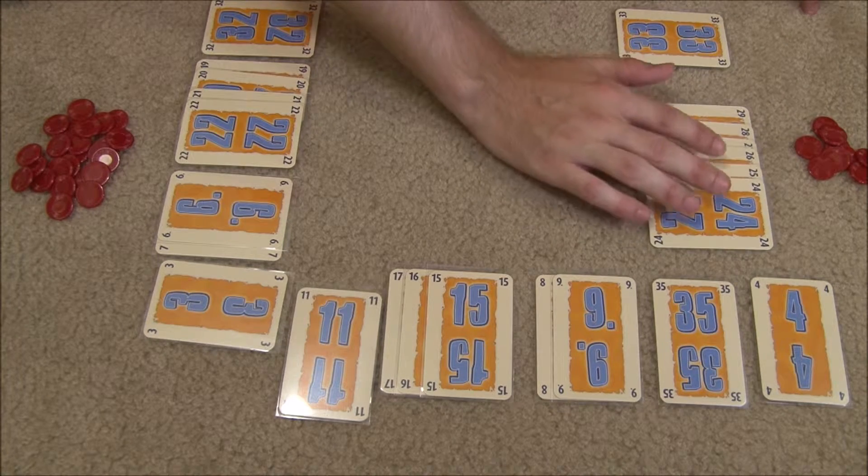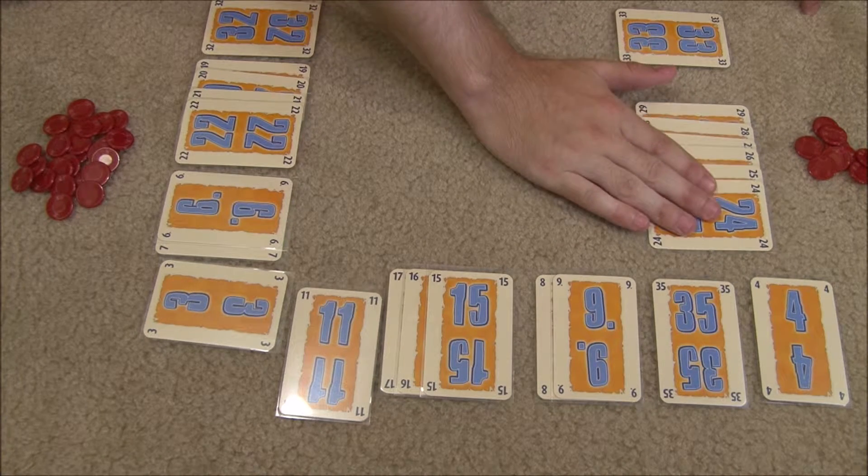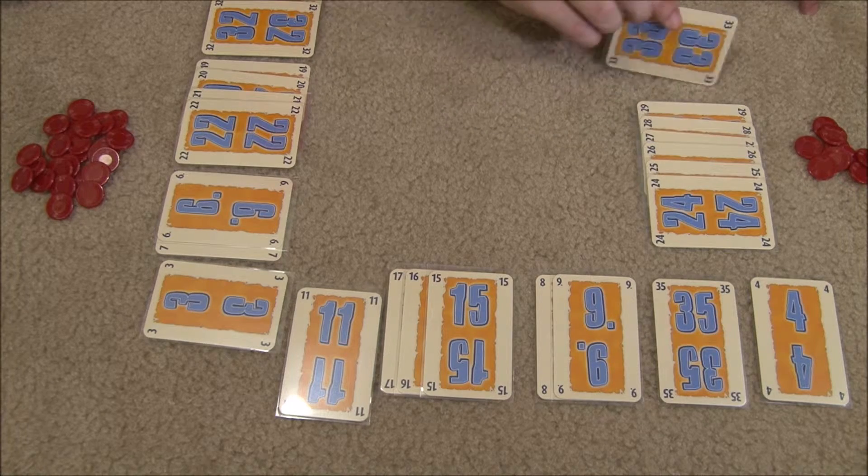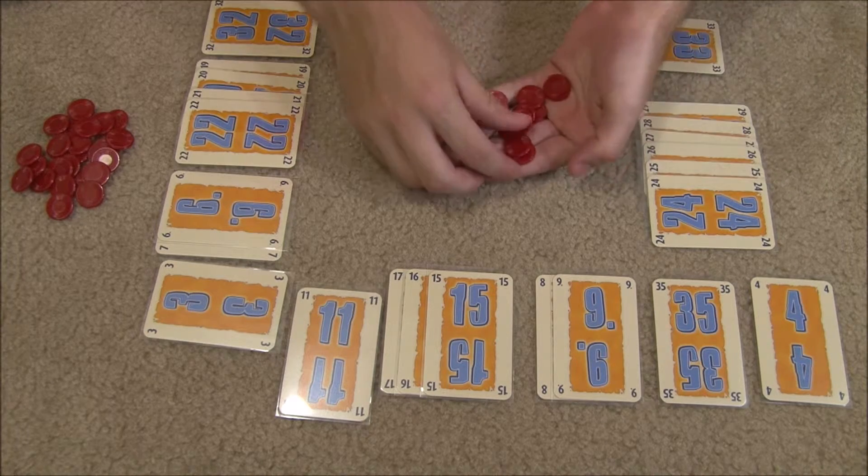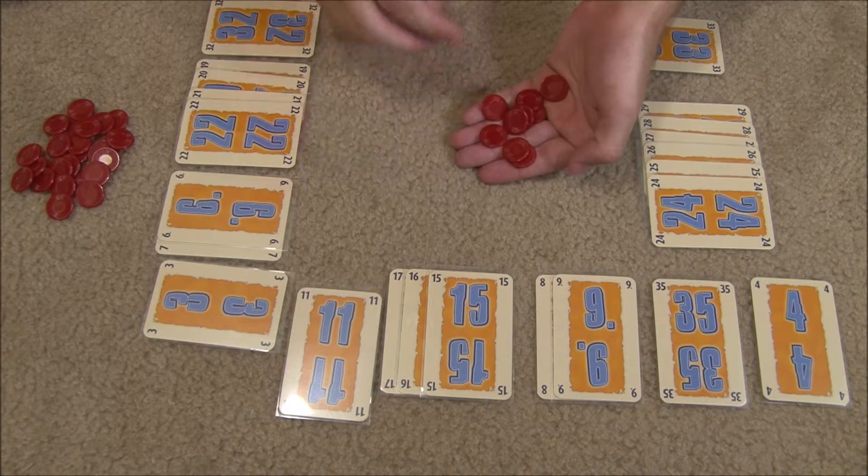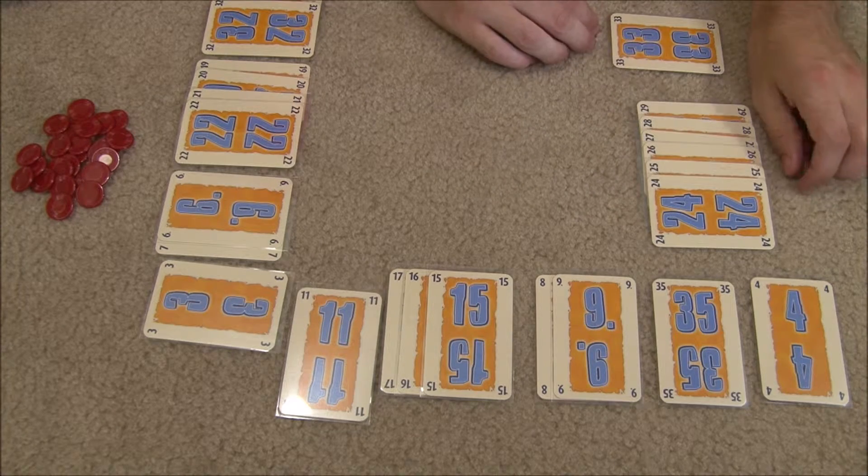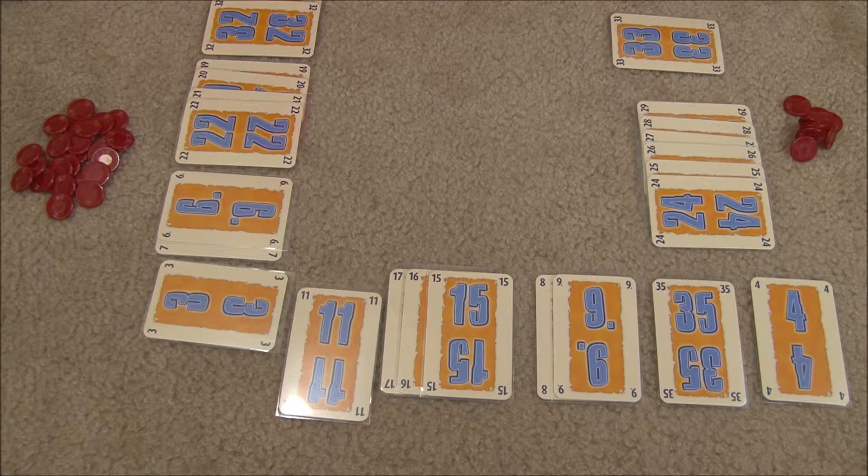To total their scores, players add up the lowest value in each consecutive set. So for instance, this guy has 24, 25, 26, 27, 28, and 29. So he has to add 24 to 33, and then he subtracts the number of chips he has left, which is 9 chips. So 24 plus 33 minus 9. And then whoever has the lowest score is going to be the winner.